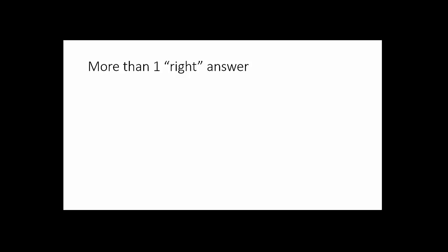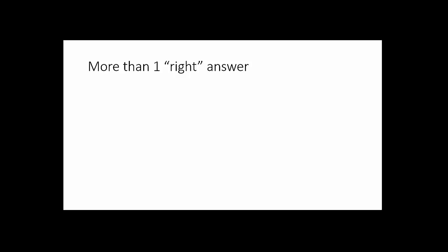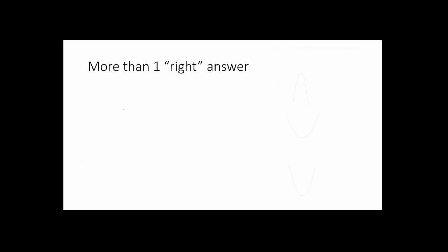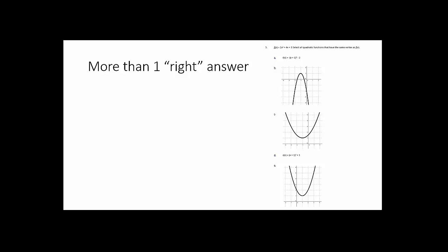Another key piece to conceptual understanding is the idea that there is more than one right answer to a situation. Here's an example from third grade — the idea of multiple select, where you can have more than one right answer to a particular situation. Or here's an example from Math 2 looking at selecting all of the different quadratic functions that have the same vertex.